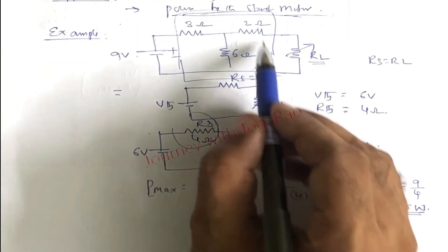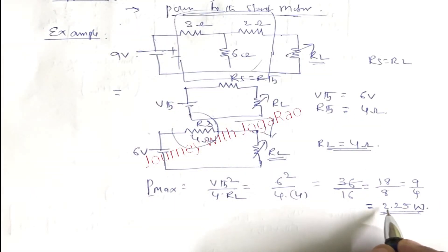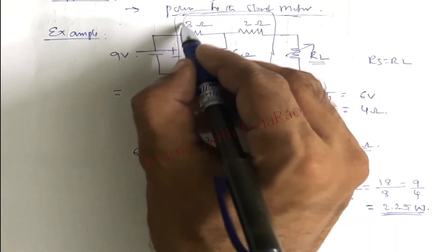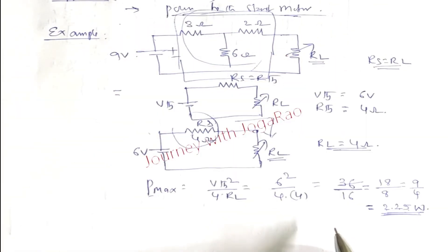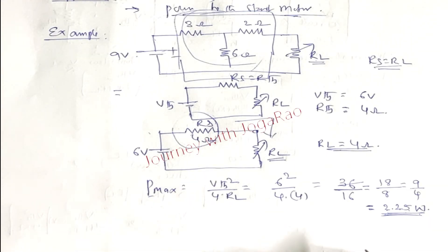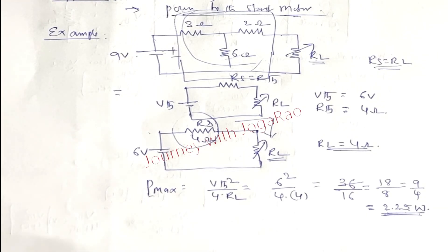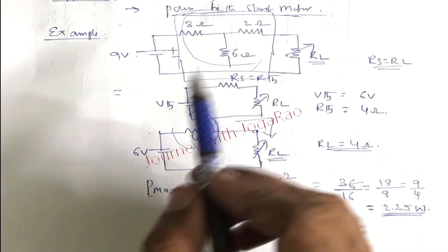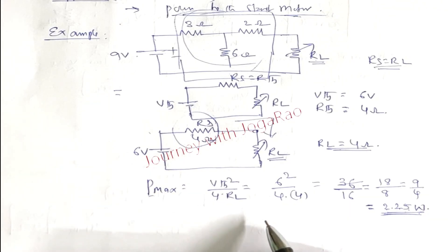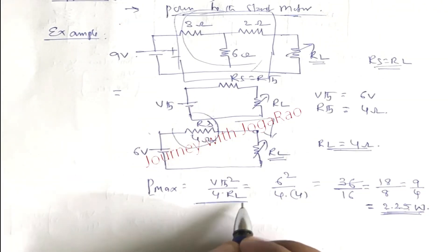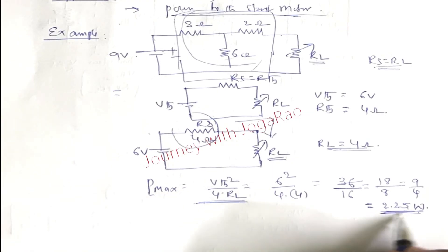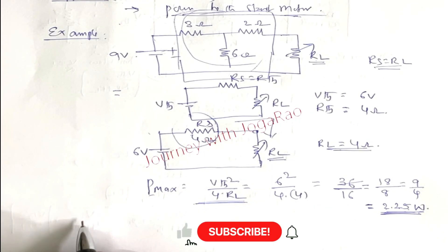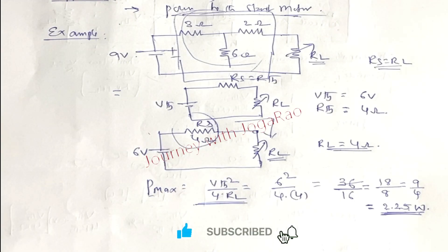The maximum power of this circuit is 2.25 watts, where source resistance equals load resistance. This is the Maximum Power Transfer Theorem. If you have any doubts, please comment in the comment box. Once you are matched with the Thevenin circuit, use the formula P_max = V_Thevenin² / (4 × RL). Please like and share with your friends. Thanks for watching.